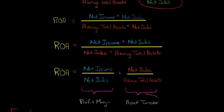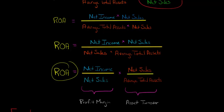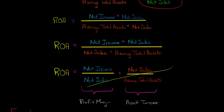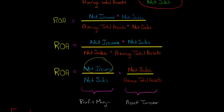That second ratio — net sales divided by average total assets — is called asset turnover. For example, if asset turnover is 4, that means for every dollar of total assets, the company generates $4 in net sales. So ROA can be thought of as net income divided by average total assets, or broken out as profit margin times asset turnover, since the net sales terms cancel.